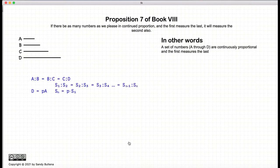Now this proposition states, let's assume we have a sequence of numbers, a set of continuously proportional numbers, such that A is to B, B is to C, C is to D, or of any size.